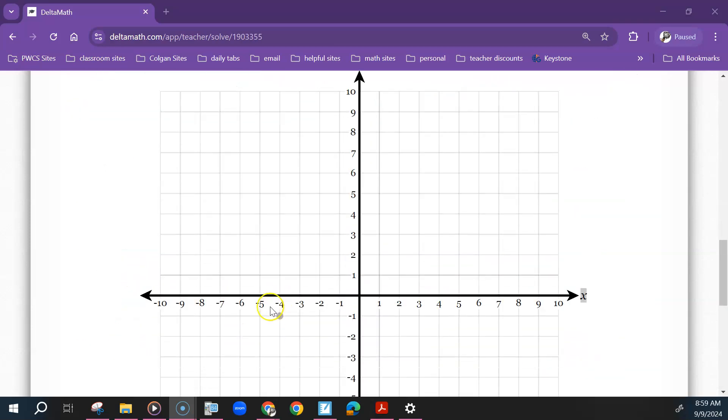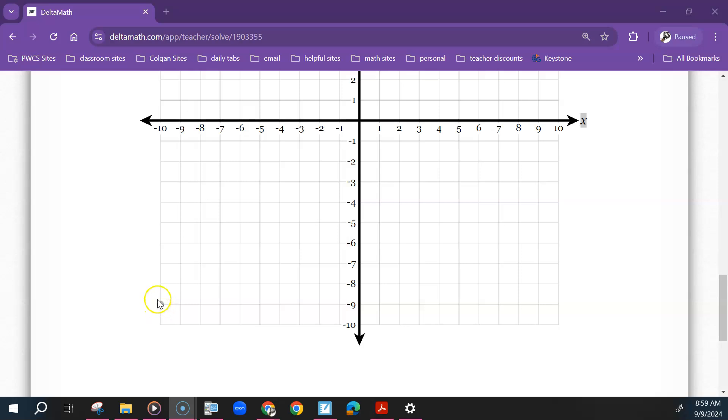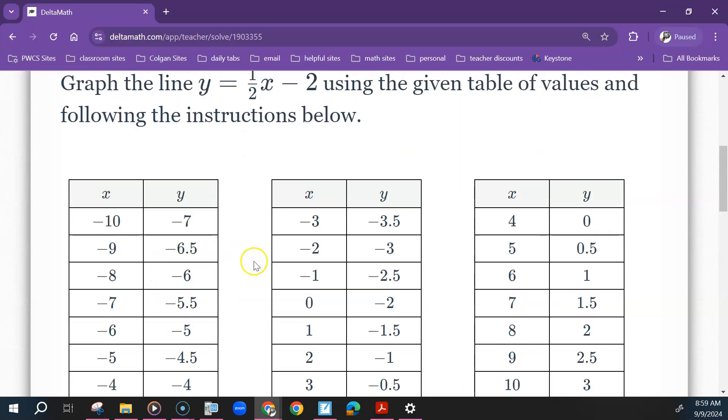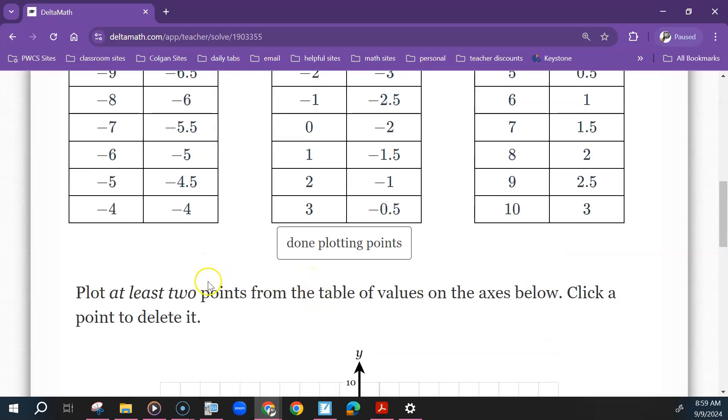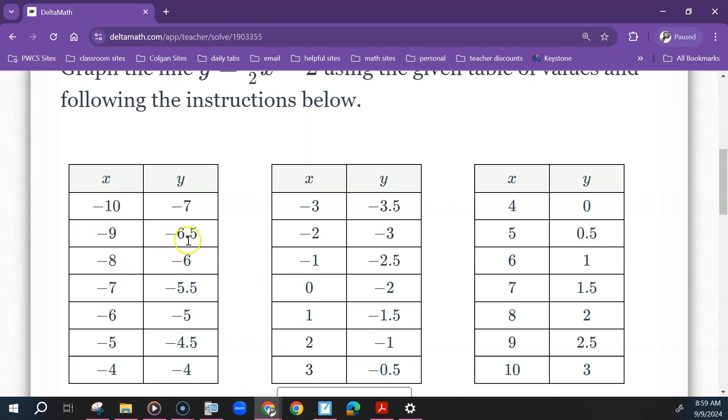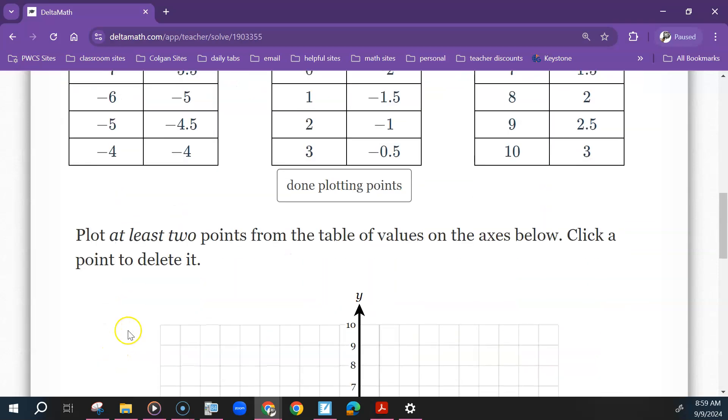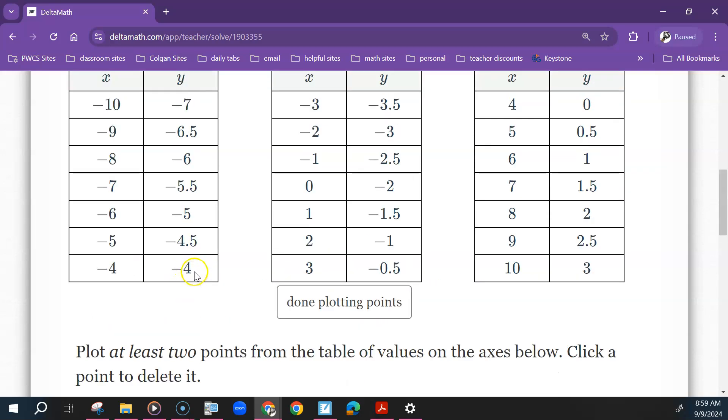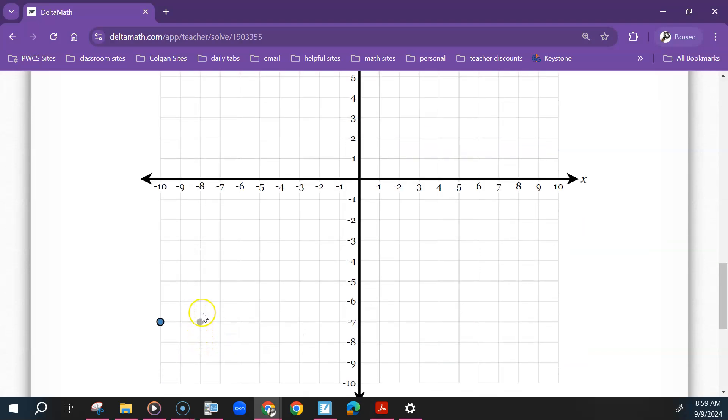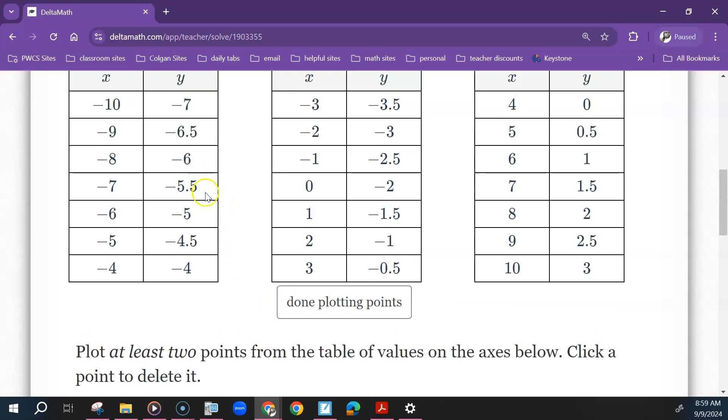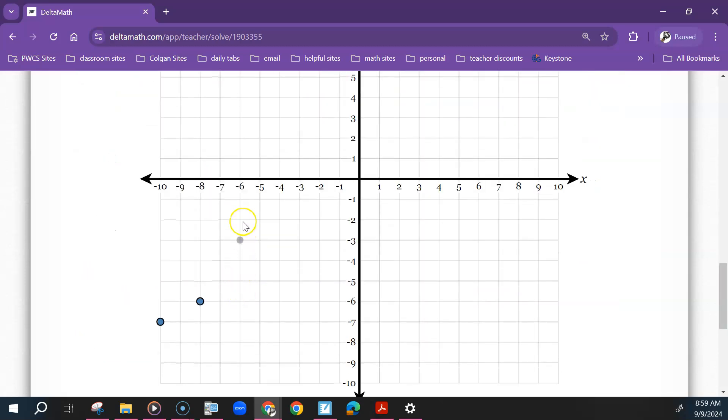So negative 10, negative 7. Negative 8, negative 6. Now you don't have to plot all of these points, but you have to plot at least two. I would stick with the ones that are whole numbers. The more points you plot, the better you could draw your line though. Negative 6, negative 5, and it looks like it has a slope of up 1 over 2.